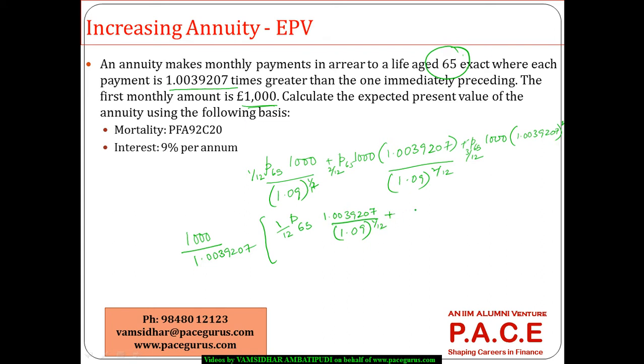If I am taking out, it is as good as 1 by 12 P65, 1.0039207 divided by 1.09 to the power 1 by 12. Similarly, I can write it as 2 by 12 P65, 1.0039207 squared divided by 1.09 to the power 2 by 12. Even if I had written the first one, this numerator also something to the power 1 by 12, the whole would have become on a monthly kind of payment basis.